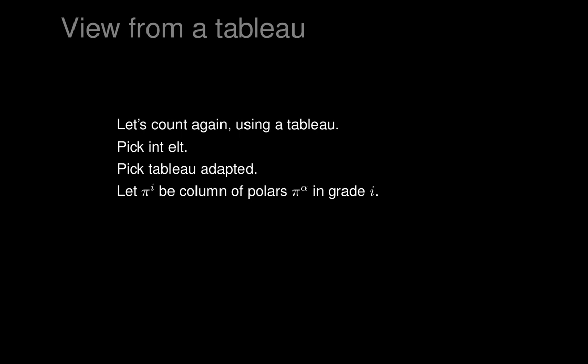Now we've got these columns of polars, and we want to write our integral elements. All the integral elements near the given one look like setting pi to be p times omega for some coefficients p. The reason is that our tableau was adapted to our integral element — that integral element was written as pi equals zero. So every nearby integral element still has the omegas linearly independent on it, thetas equal to zero, and the pi's equal to some multiples of the omegas. Those coefficients p_ij are not arbitrary; they have to satisfy some equations in order that the subspace of the tangent space is actually an integral element.